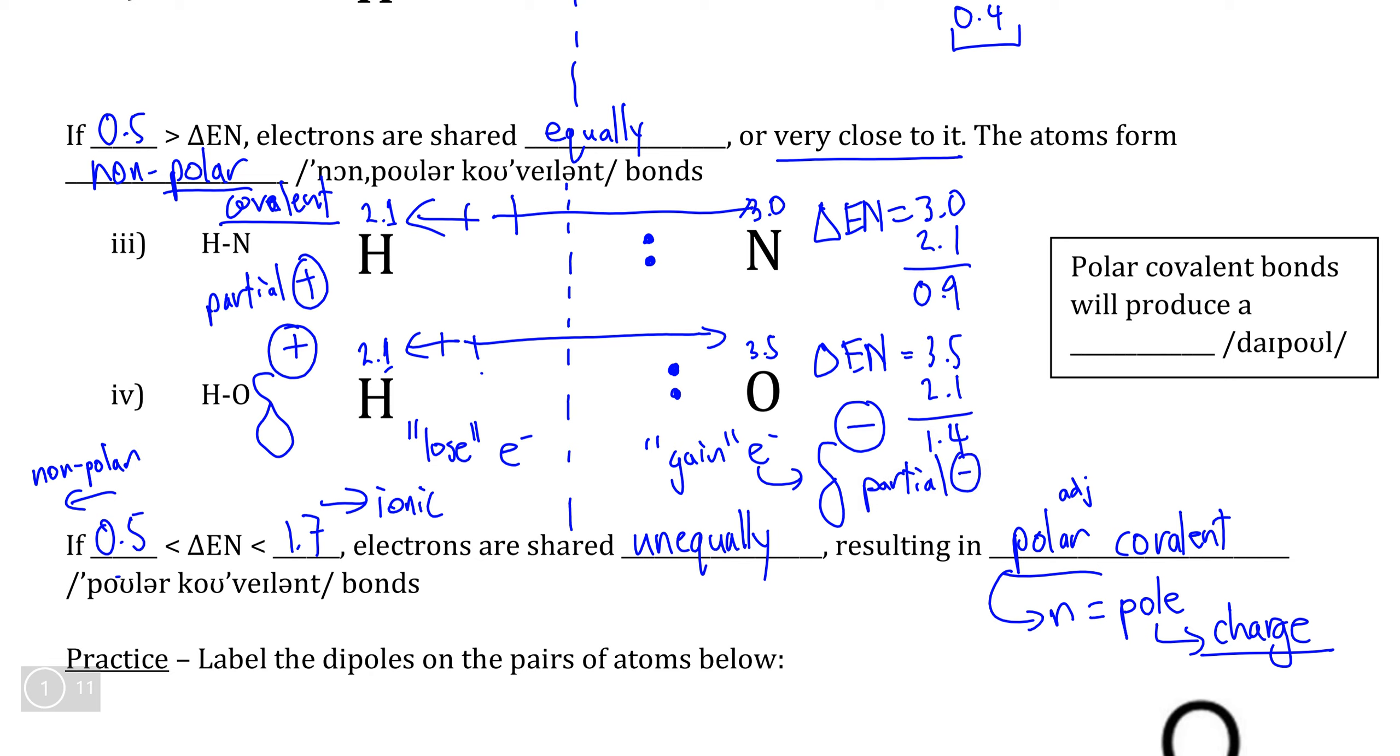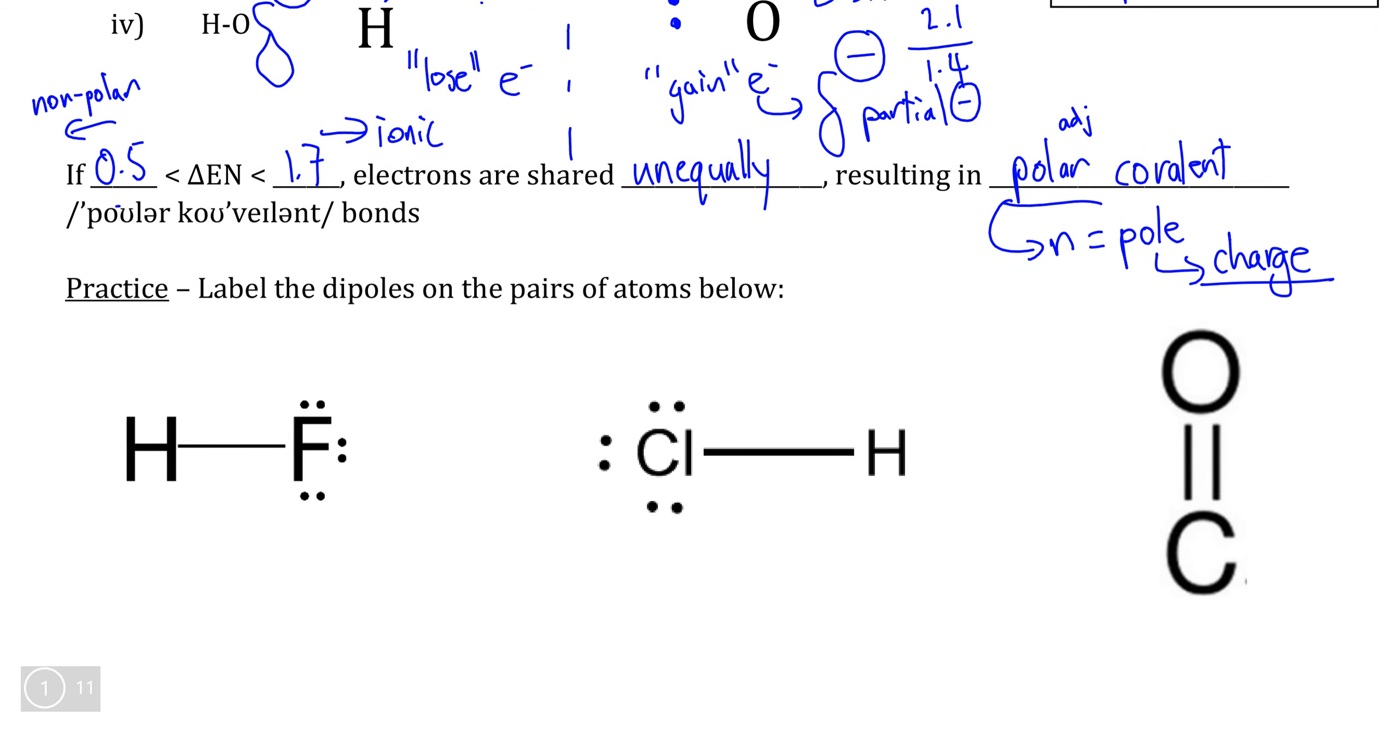And this phenomenon here, where we have two charges that are opposite, on opposite ends of a bond, are what we call dipoles. Again, literally meaning a pole referring to some sort of positive or negative charge, and di meaning that we have one positive and one negative in the same bond.